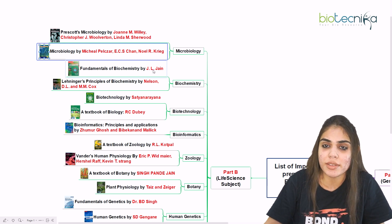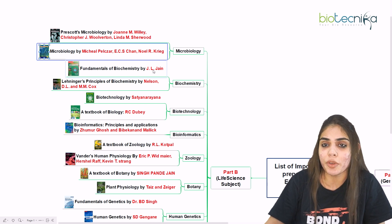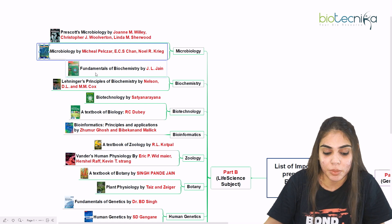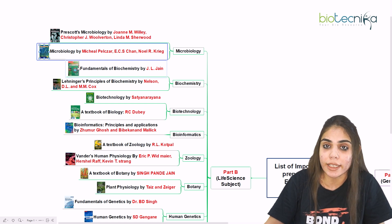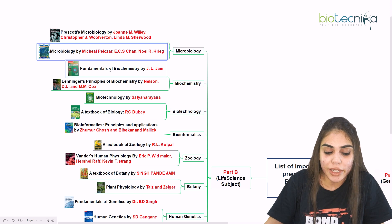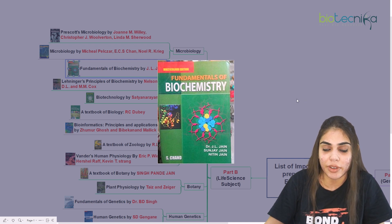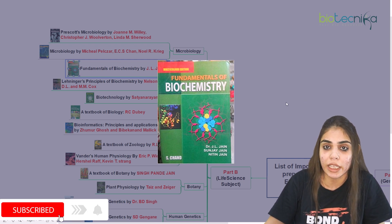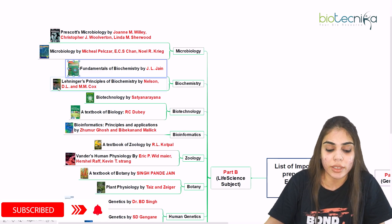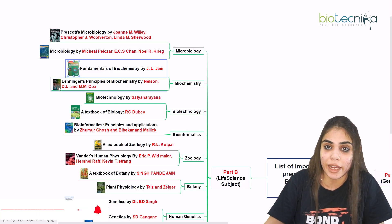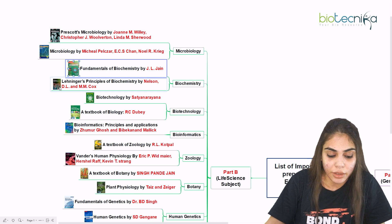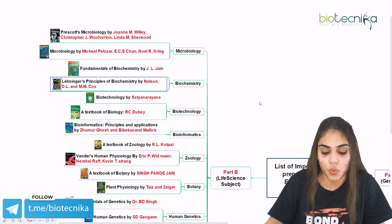For biochemistry, I recommend going for an Indian author because the CUET PG questions are very direct, so you need to prepare superficially. The first option is Fundamentals of Biochemistry by JL Jain — an Indian author book whose ebook you can easily download. The second is an international author: Lehninger's Principles of Biochemistry by Nelson and Cox. You can go for either of these books.